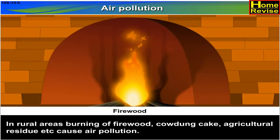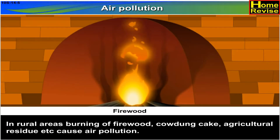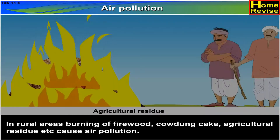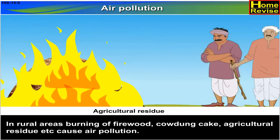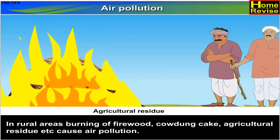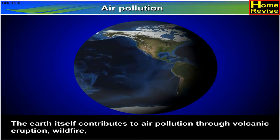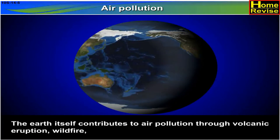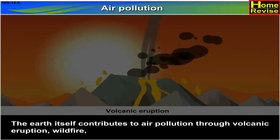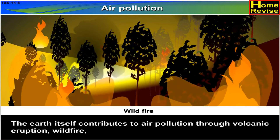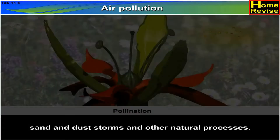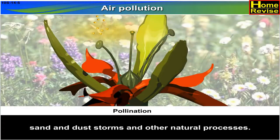In rural areas, burning of firewood, cow dung cakes, agricultural residue, etc. causes air pollution. The earth itself contributes to air pollution through volcanic eruptions, wildfire, sand and dust storms, and other natural processes.